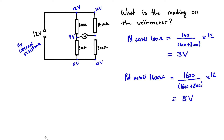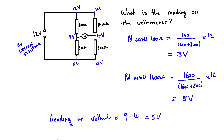For the other branch with the 1600 ohm resistor, there is an 8 volt potential difference across it. With 12 volts at the top, that corresponds to a 4 volt potential at the junction point, giving 4 volts across the 800 ohm resistor. The voltmeter reads the potential difference between the two midpoints: 9 minus 4 equals 5 volts.